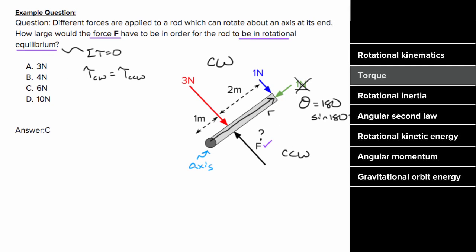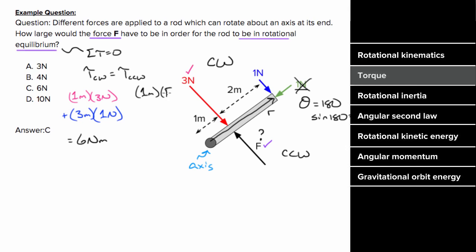The clockwise torque from the three-newton force is one meter times three newtons. For the one-newton force, the R from the axis is three meters, giving three meters times one newton. Total clockwise torque is six newton-meters. The counterclockwise torque from F is one meter times F. Setting six newton-meters equal to one times F, the force F must equal six newtons.